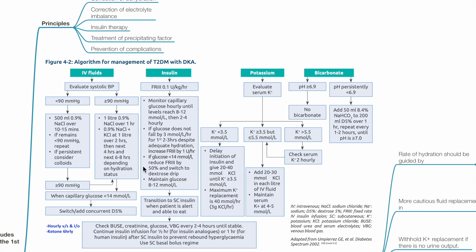If glucose is less than 14 mmol per liter, reduce fixed rate insulin by 50% and switch to dextrose drip. Maintain glucose 8-12 mmol per liter. Transition to subcutaneous insulin when patient is alert and able to eat.